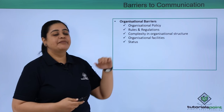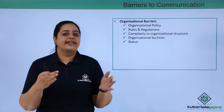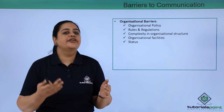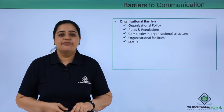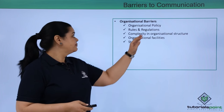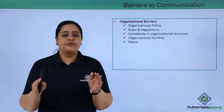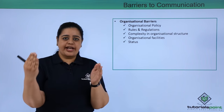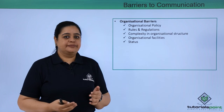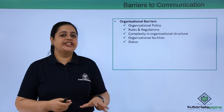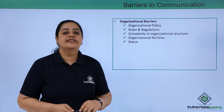The next type is organizational barriers — the attitude an organization has in terms of communication. For example, organizational policy: if the organization is very strict and does not allow or advocate free flow of communication, that policy acts as a barrier. Similarly, rules and regulations: if employees are required to follow rigid rules, they are not encouraged to communicate freely, creating rigidity that acts as a barrier.